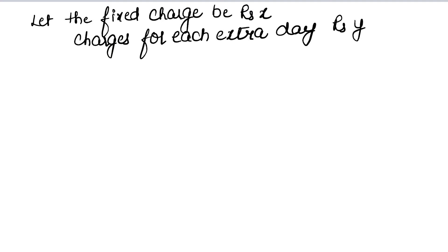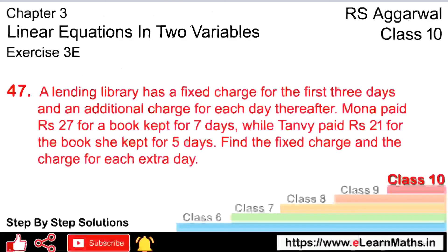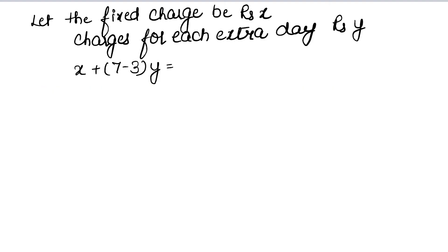First, the fixed charges remain the same for three days, but for the remaining days beyond that, extra charges apply. So she kept it for 7 days. Out of 7 days, 3 days are covered in the fixed charge, right? So 7 minus 3 equals 4. That's 4y for additional charges. And she paid rupees 27.